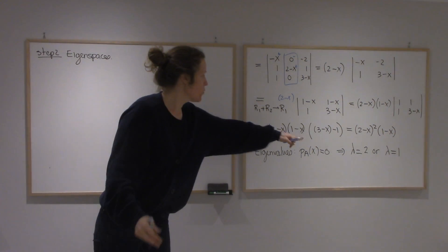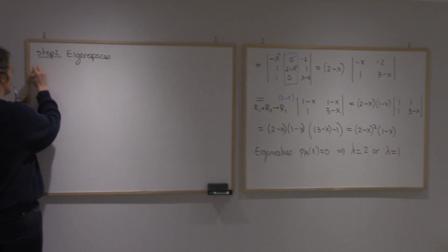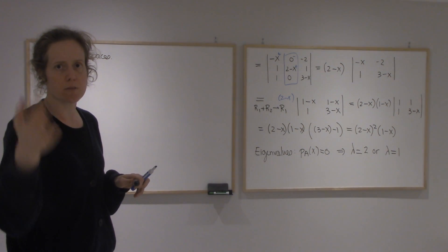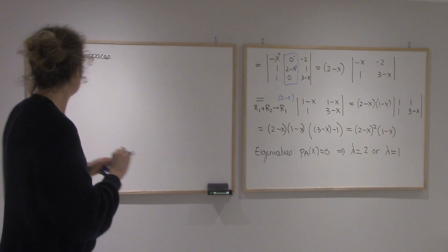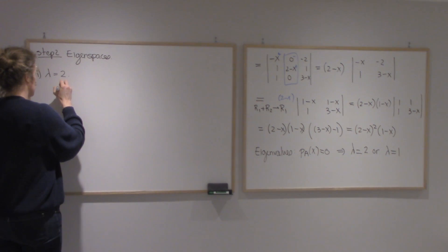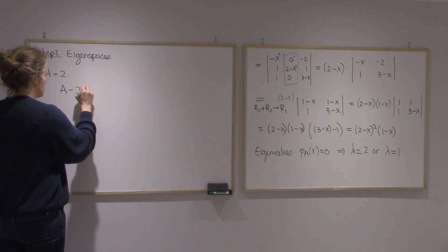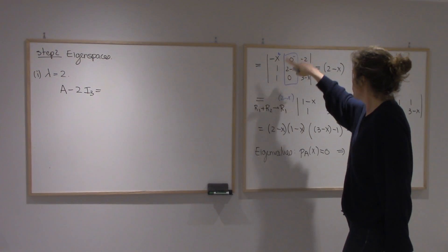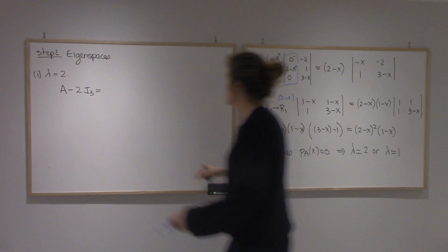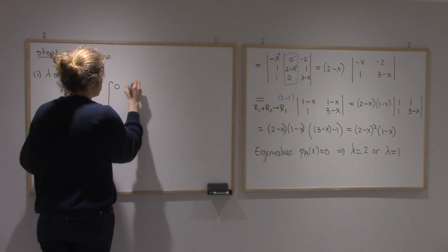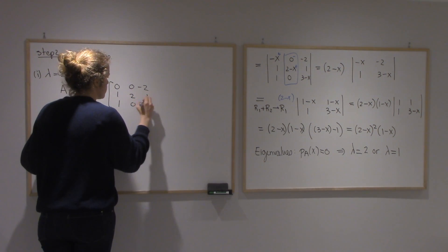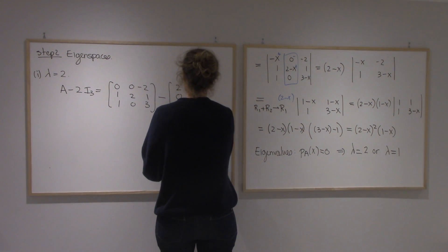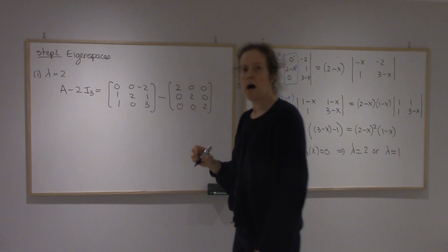Alright, so let's start with lambda equals 2. So again, an eigenvector here would be an element of the null space of A minus lambda I. So let's find that matrix. I don't remember A, but it's the same as this matrix if I put x equals 0. So I'll get 0, 0 minus 2, 1, 2, 1, 1, 0, 3, minus 2 on the diagonal. I'm subtracting them.